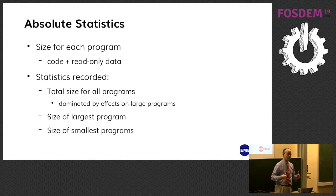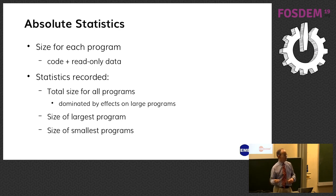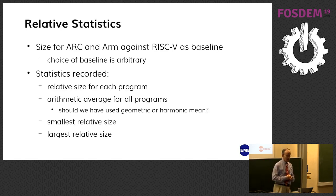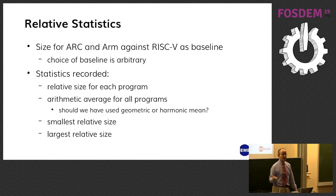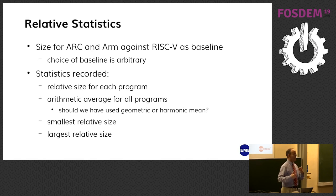For each of those 79 programs, we'll capture the size of code and read-only data and record a total. That will be dominated by the large programs, because one large program will have as much code as 10 small ones. We'll also record the size of the largest and smallest program. For relative statistics, I've taken RISC-V as the baseline — it's an arbitrary choice. We'll look at each program relative in code size to RISC-V, take an arithmetic average, and look at the smallest relative size to find where compilers are clearly doing something different.